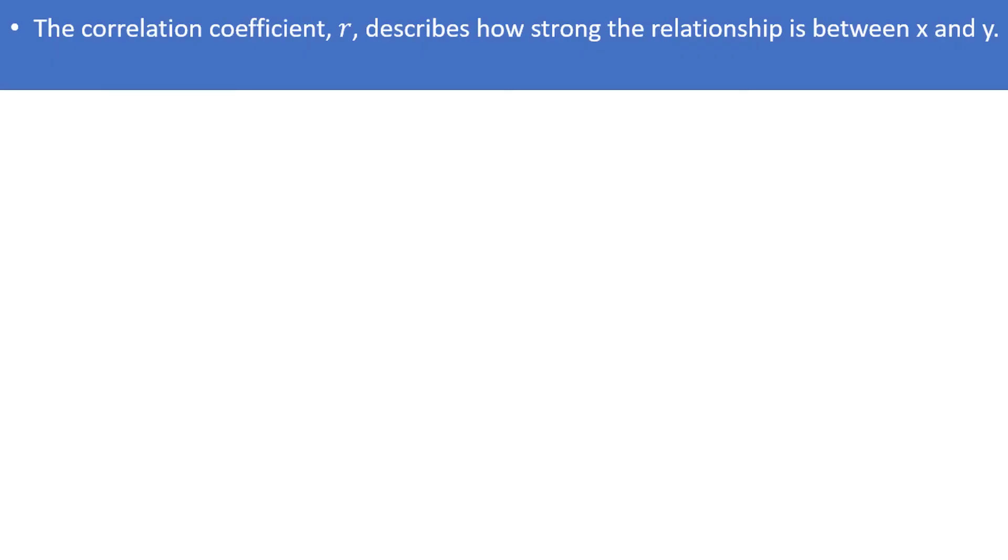We use a value called the correlation coefficient, represented by the letter r, to describe how strong the relationship is between x and y. r is a unitless measurement between negative 1 and 1.